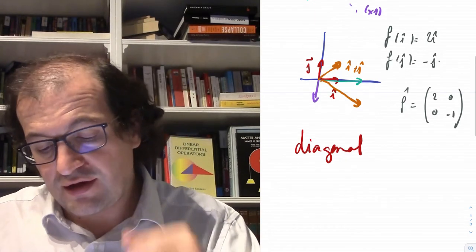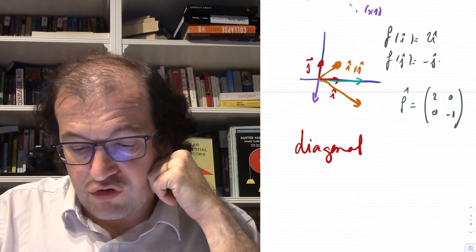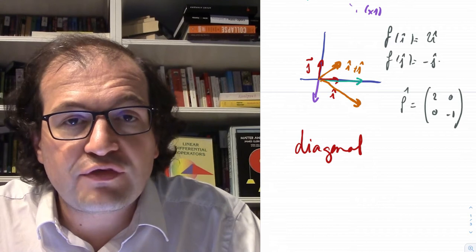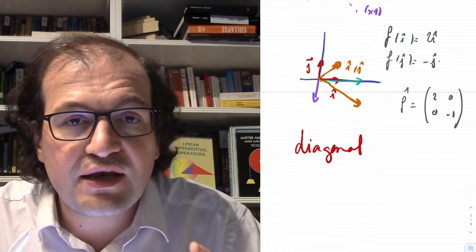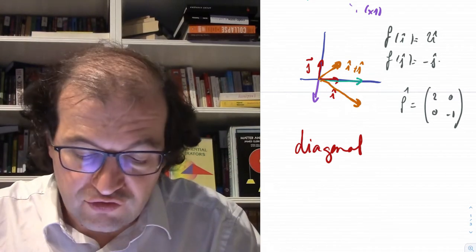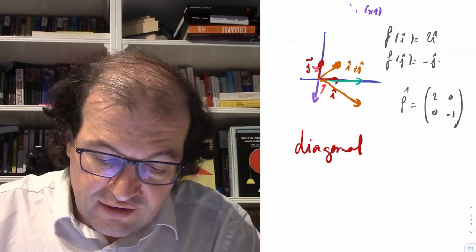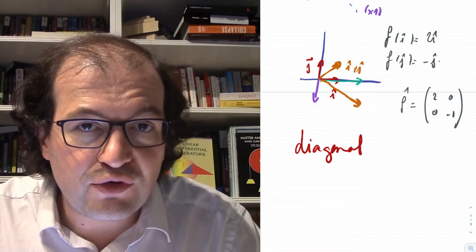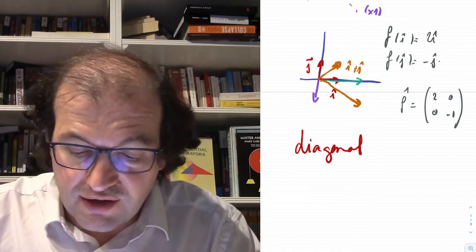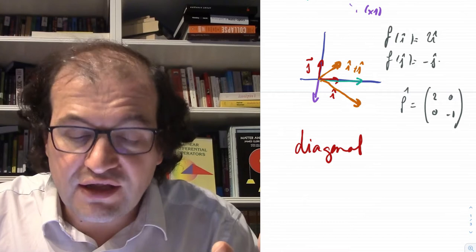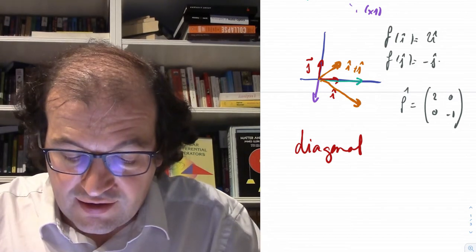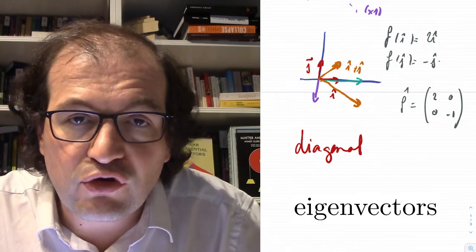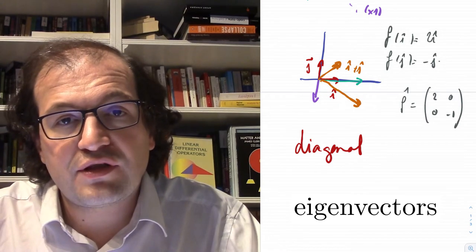What we are going to see today is diagonalization — a very powerful process that takes any linear application and finds a basis of vectors, called eigenvectors, in which the function can be represented diagonally. These eigenvectors can be any set of linearly independent vectors; they don't need to be orthogonal or normalized.